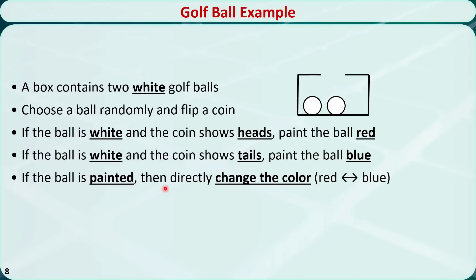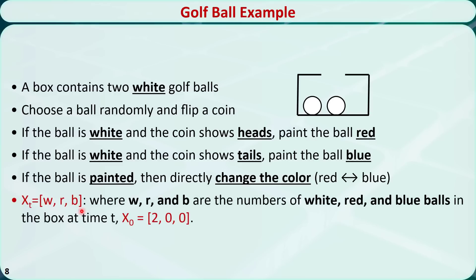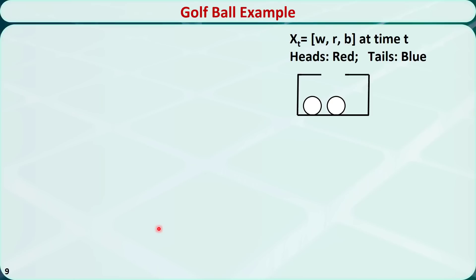Now let's build the Markov chain for this problem. X_t is defined as the vector (W, R, B), which are the numbers of white, red, and blue balls respectively in the box at time t. At the beginning, x_0 equals (2, 0, 0) — meaning 2 white balls, 0 red balls, and 0 blue balls.